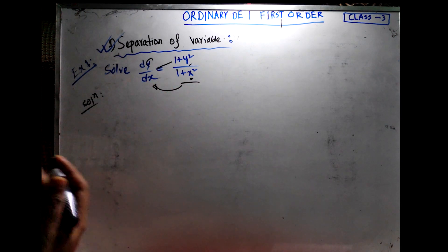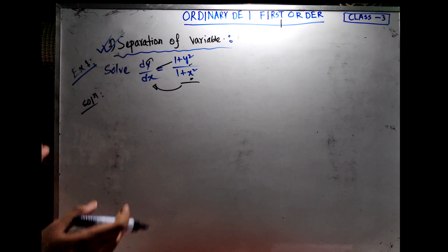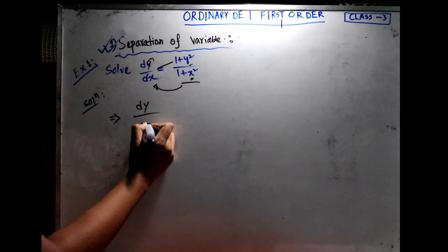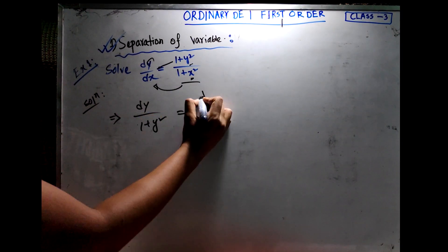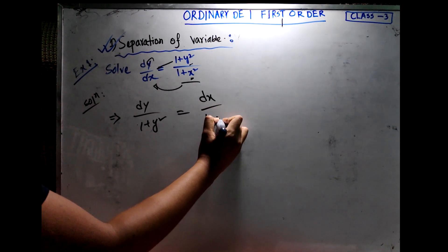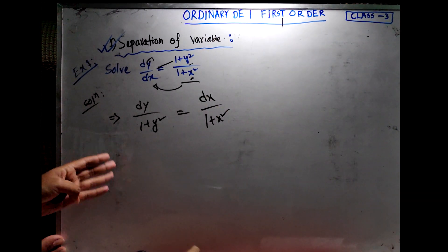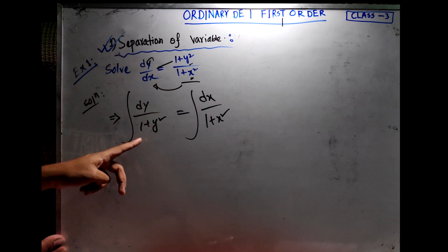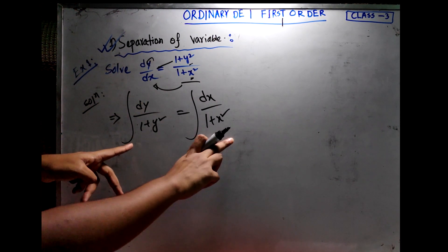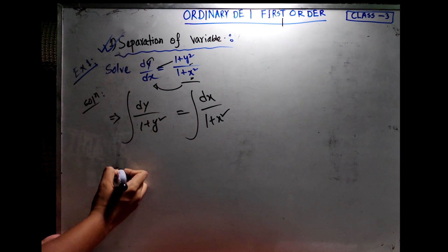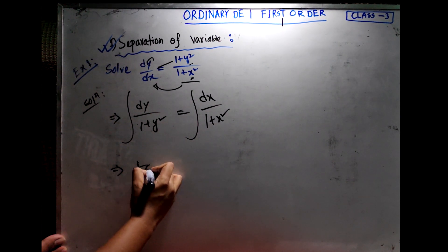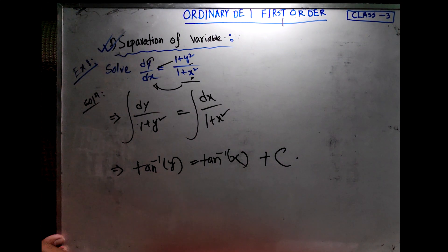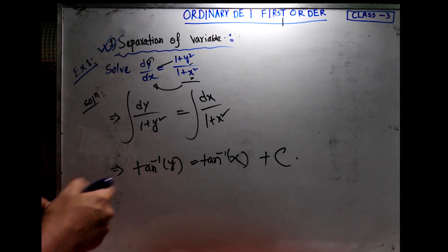Separating variables: dy / (1 + y²) = dx / (1 + x²). Integrating both sides using the standard formula, we get tan⁻¹(y) = tan⁻¹(x) + c. This is the answer for the first-order differential equation Example 1.